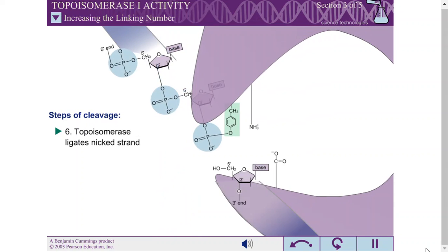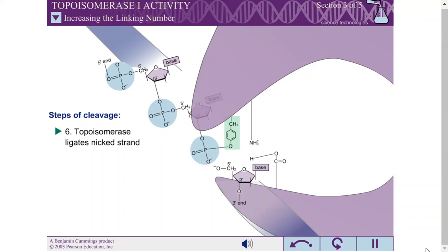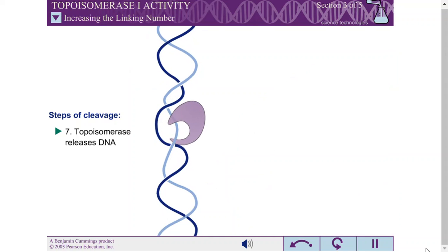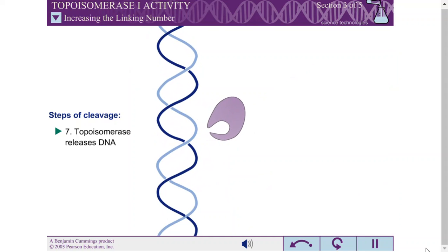The topoisomerase then ligates the nicked strand by reversing the cleavage reaction. Finally, the topoisomerase undergoes another conformational change, opening up and releasing the DNA.